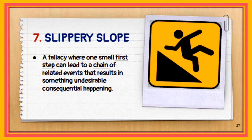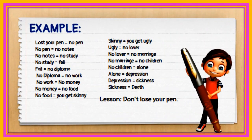The seventh type of logical fallacy is the slippery slope. This is a fallacy where one small first step can lead to a chain of related events resulting in something undesirable happening. Look at this chain of related events, which is not logical.